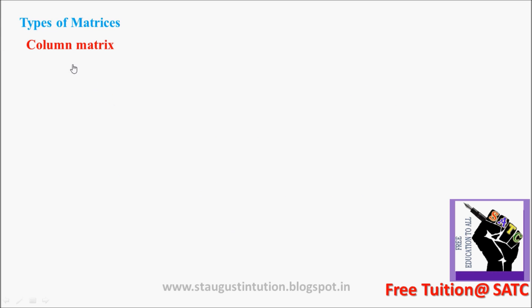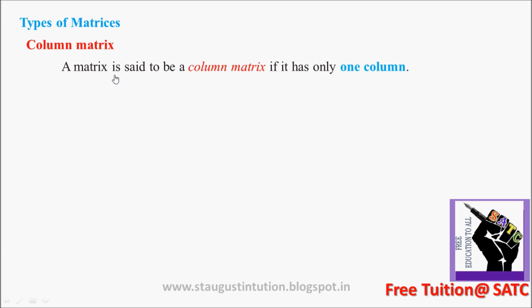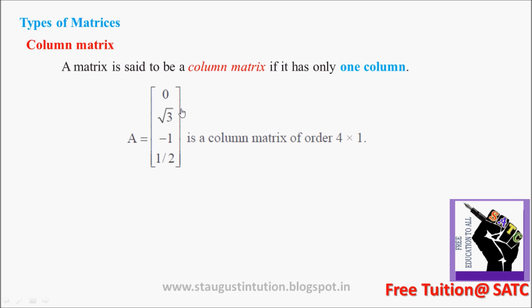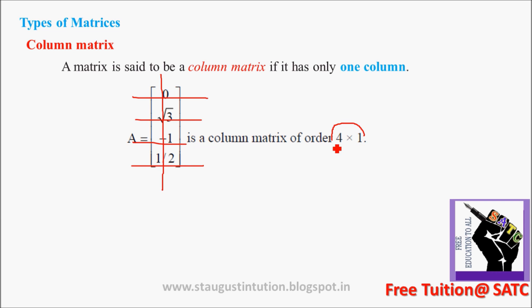First, Column Matrix. What is a Column Matrix? Very simple. A matrix is said to be a Column Matrix if it has only one column. For example, this matrix has elements 0, root 3, negative 1, and 1/2 — there are 4 rows but only one column. That is a 4 by 1 matrix.